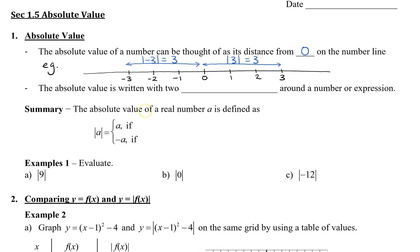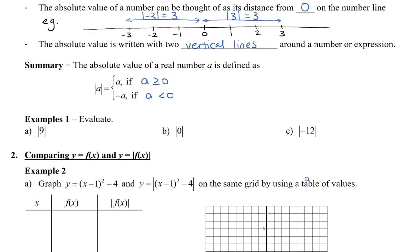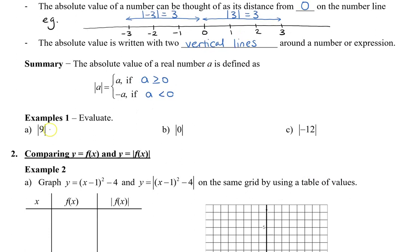The absolute value is written with two vertical lines around a number or an expression. To summarize: the absolute value of a real number a equals a if a is positive or 0, and equals negative a if a is less than 0. The reason it's negative a is because a is already a negative number, so negative negative a gives a positive value. For example, the absolute value of 9 is 9, the absolute value of 0 is 0, and the absolute value of negative 12 is 12.